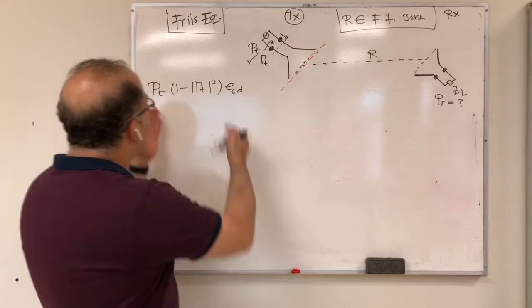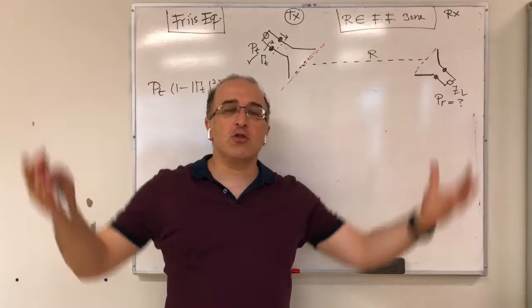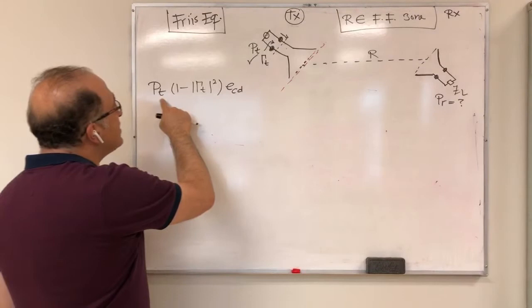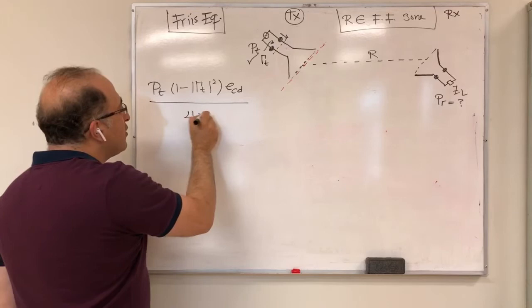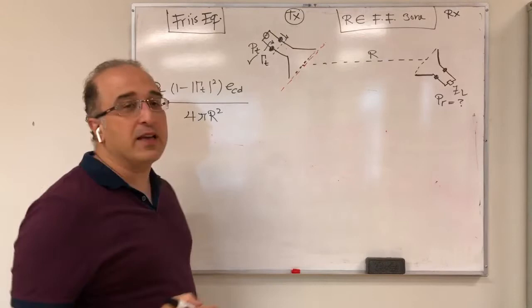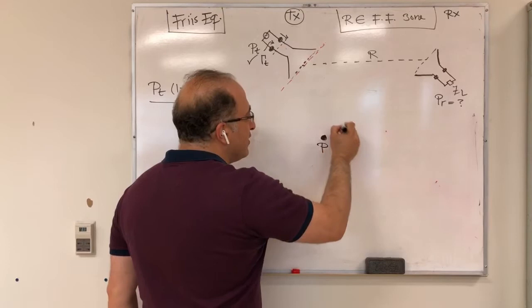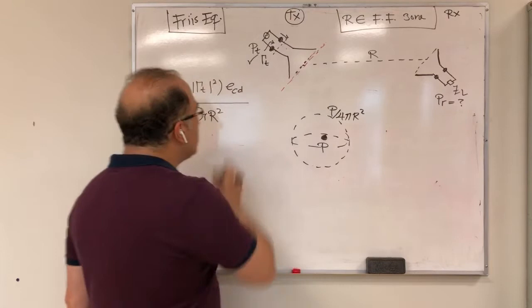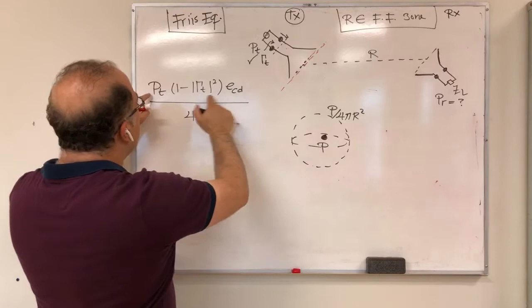An isotropic antenna distributes power equally on a spherical wavefront, so the power density is P divided by 4πR². This is the power density if the antenna were isotropic. But our antenna is not isotropic — it has directivity — so to convert to the power density of the actual antenna, we multiply by its directivity D_T(θ_T, φ_T), where θ_T and φ_T is the direction from the transmit antenna toward the receive antenna.